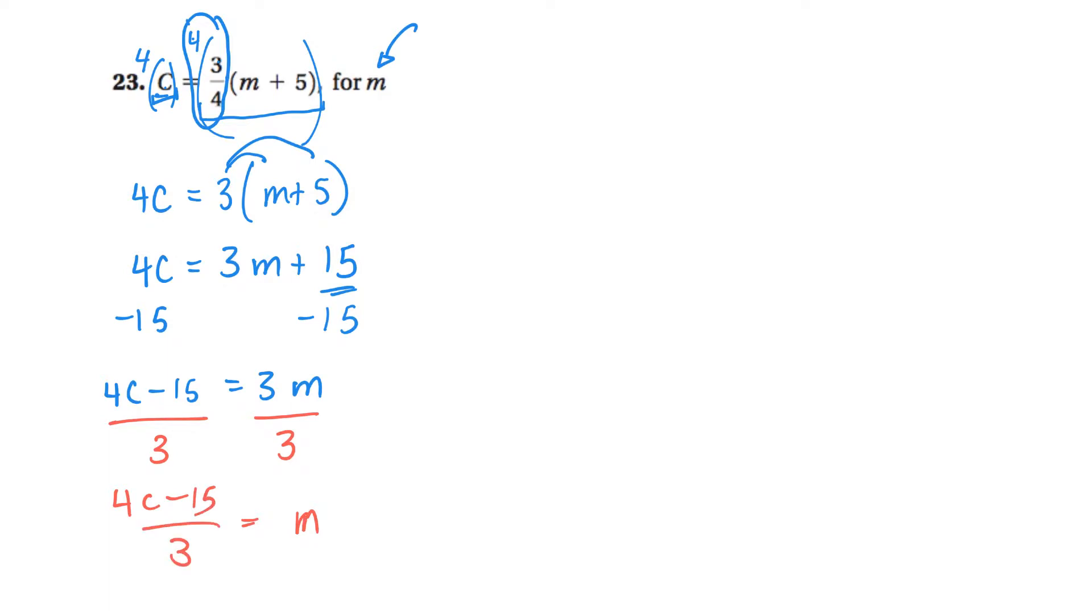Sort of like the last question, you could leave it like that. I'm happy there. Or you could split that up and say 4c over three minus 15 over three is equal to m. And I split it up there just because I saw that the three would go into 15. So I could write it as 4c over three minus five is equal to m.